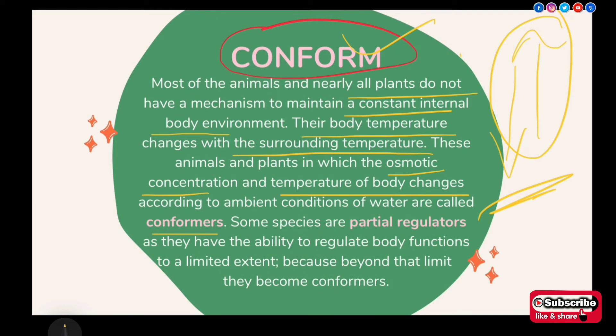Some species can regulate their body temperature to some extent — these are called partial regulators. They are 'partial' because they can only maintain their body temperature up to a certain limit, not fully. Because beyond that limit, they become conformers. If they cannot control their body temperature beyond that point, they become conformers.